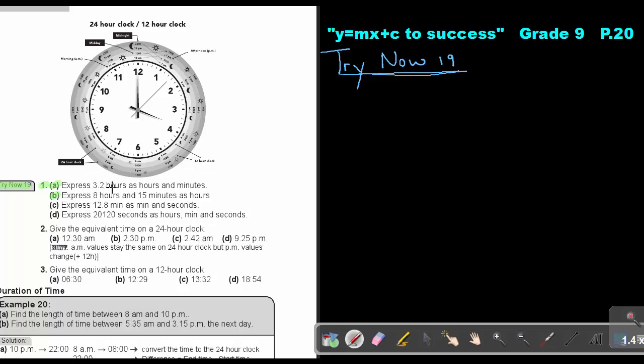Express 3.2 hours as hours and minutes. Let's just write the table here because it's easy. So it's hours, minutes, seconds. That is 60, 60. So if I want to go to this side, I always multiply. And if I want to come back, I always divide.